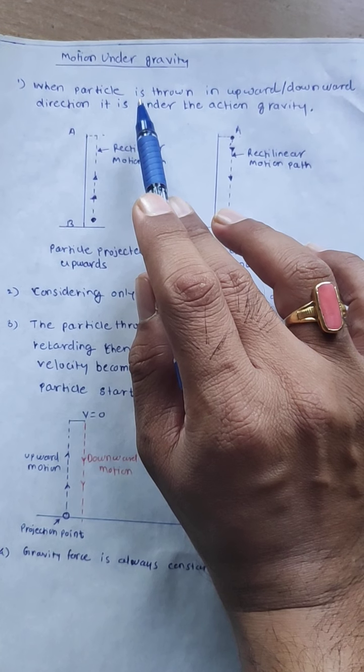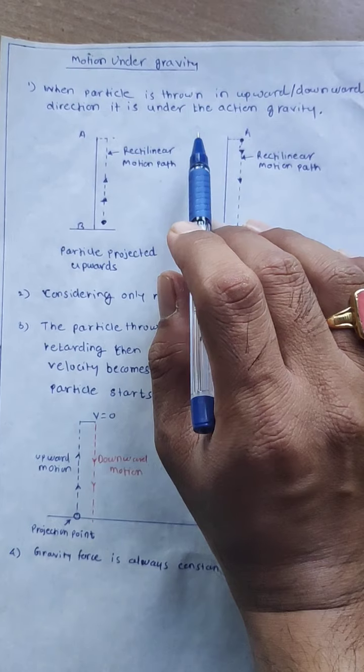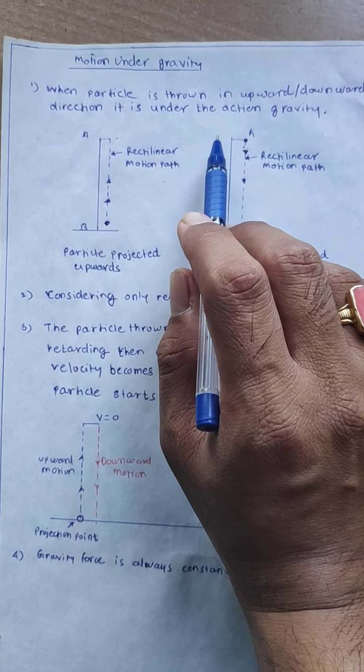When a particle is thrown in upward or downward direction, it is under the action of gravity continuously.